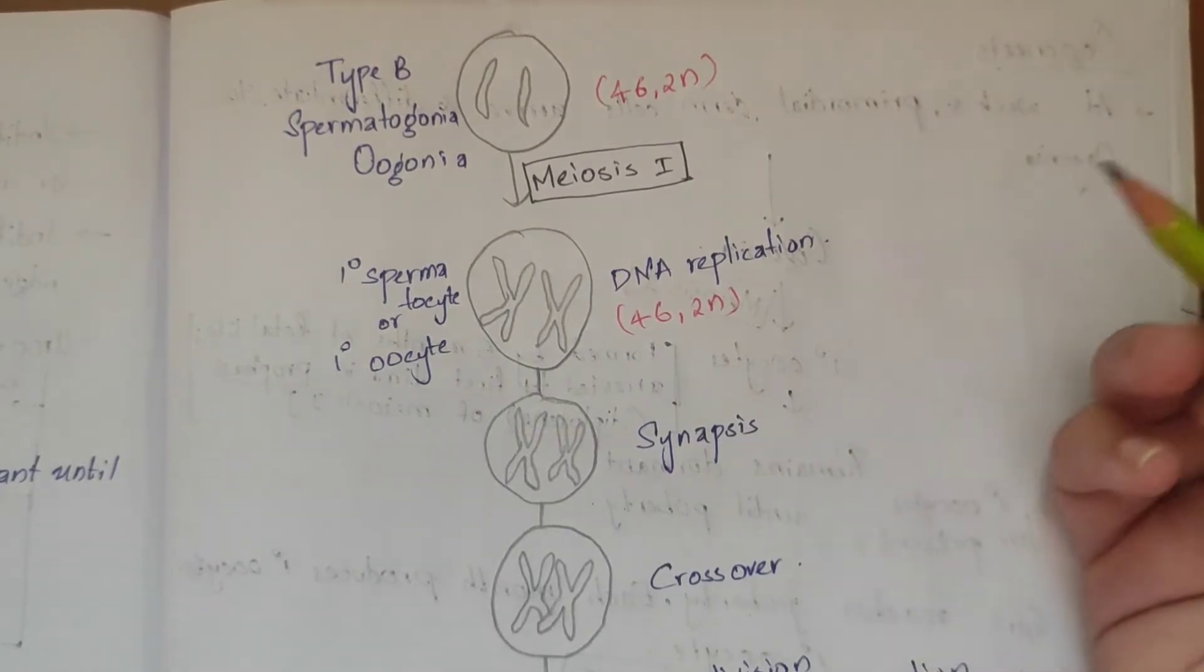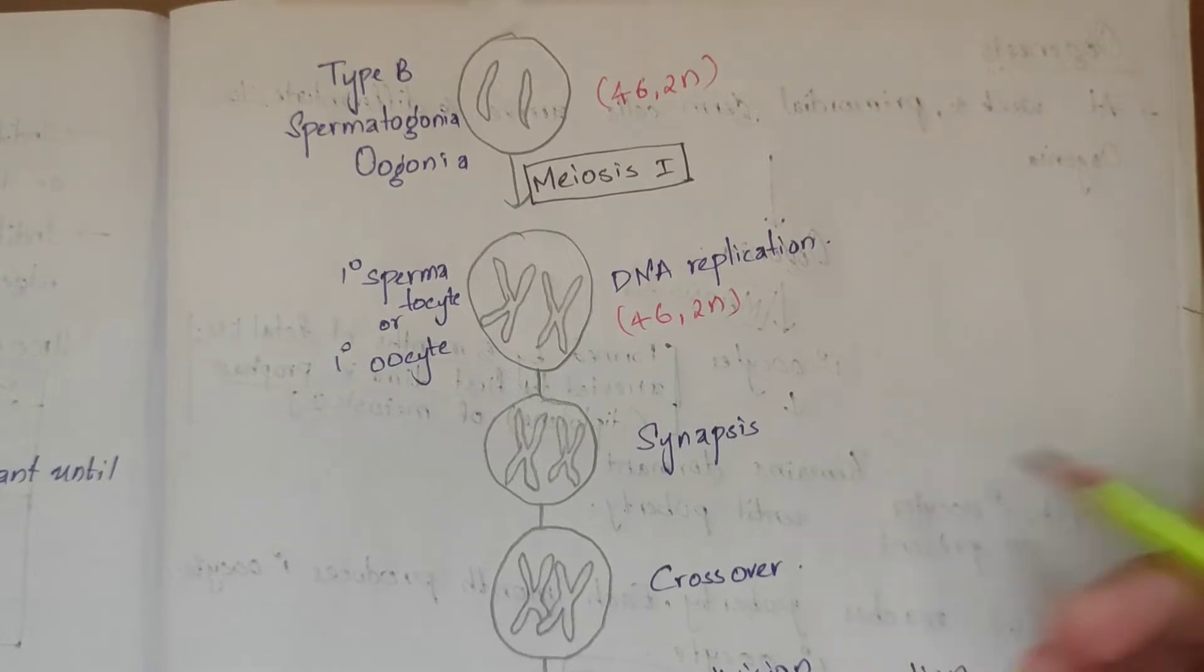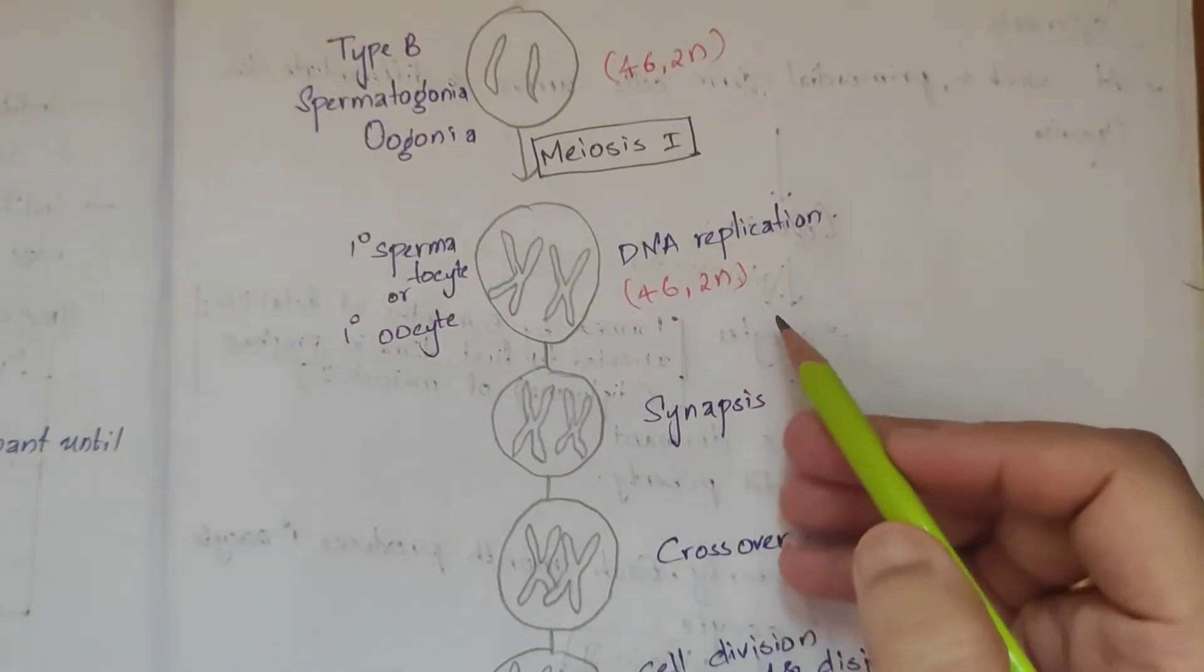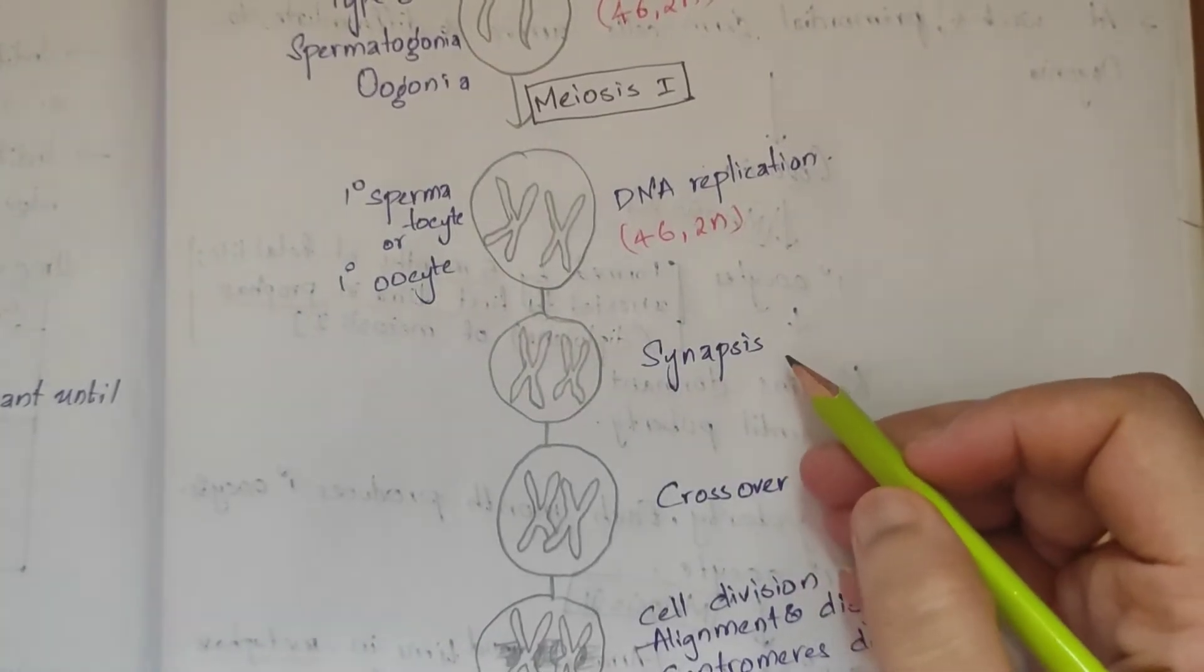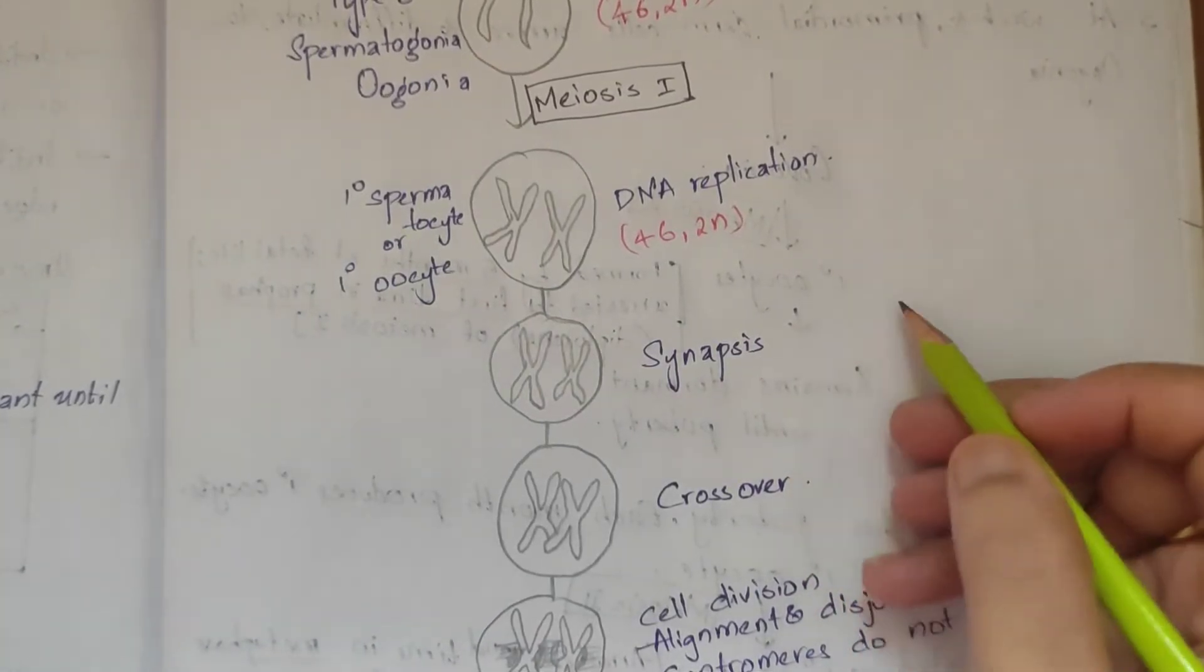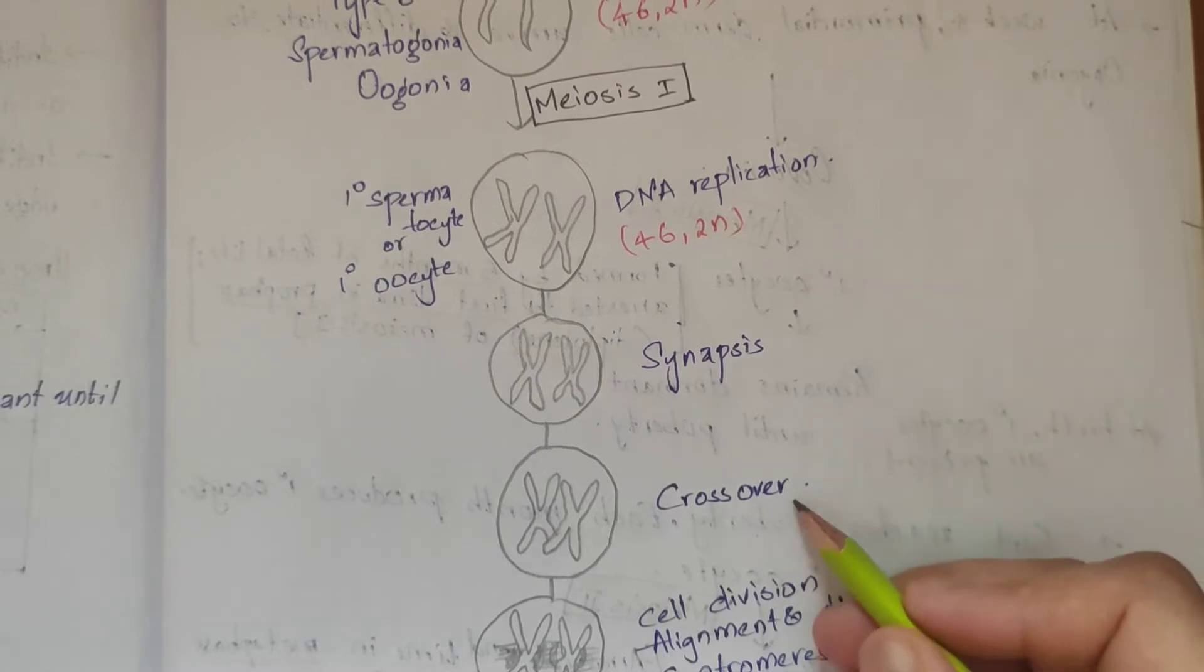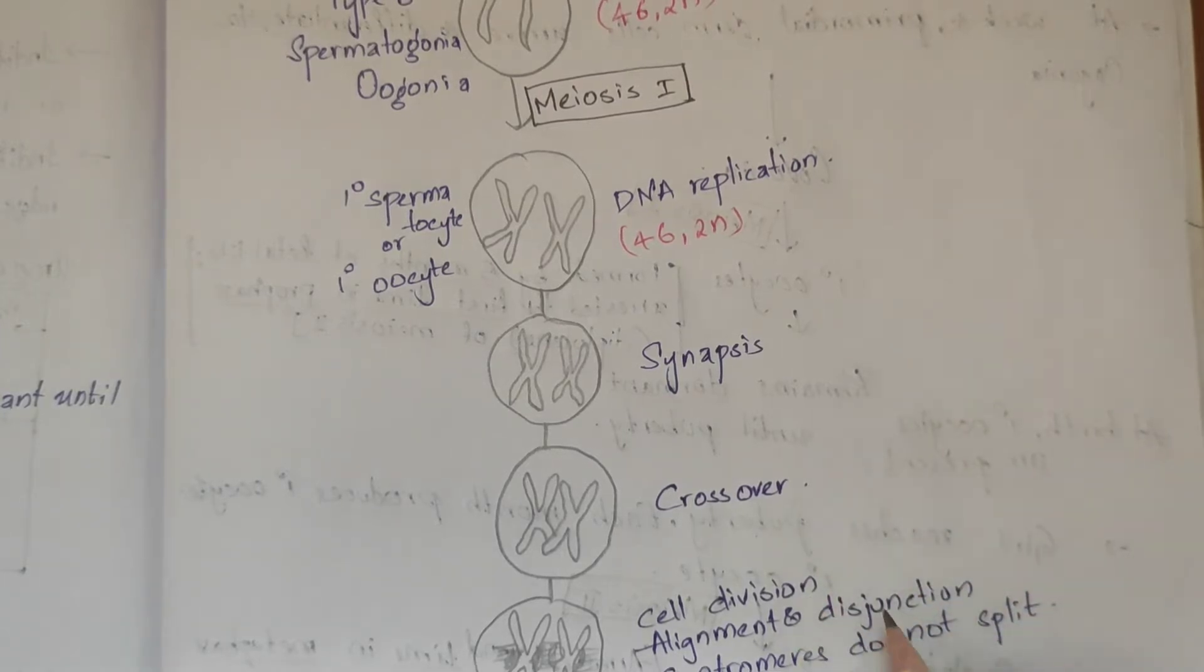Meiosis has two types: meiosis 1 and meiosis 2. First, in meiosis 1, there is synapsis - the pairing of 46 homologous chromosomes - and crossing over, which is very important because it involves the exchange of segments of DNA. Then there is disjunction.